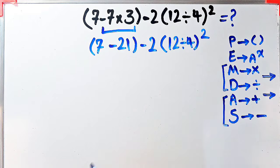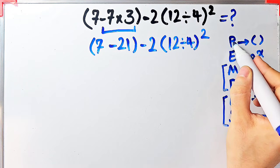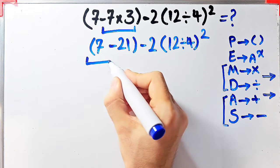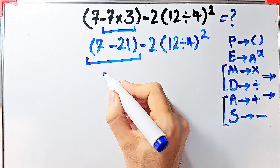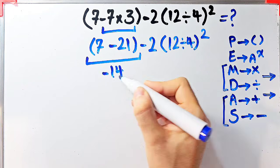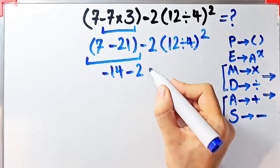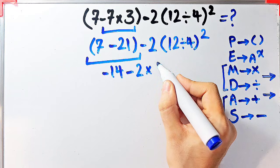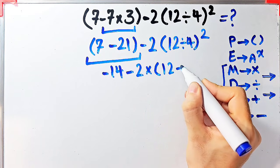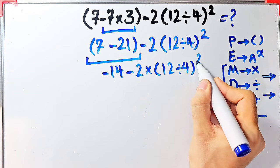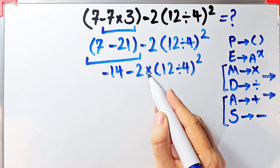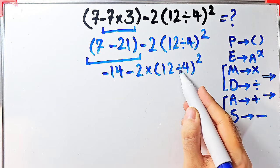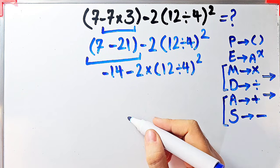Again we simplify the first parentheses. Inside these parentheses we have seven minus twenty-one. Seven minus twenty-one equals negative fourteen. Now we have negative fourteen, minus two, then times twelve divided by four, then to the power of two. Now we have subtraction, multiplication, parentheses, division, and exponent.